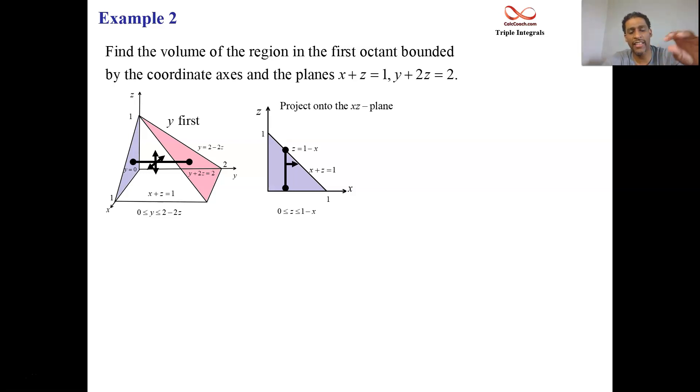The low end of z is zero. The high end of z is this line. The line's name is x plus z equals one. We solve it for z. We get z is one minus x. So those are the bounds on z. We have the bounds on y. We have the bounds on z.